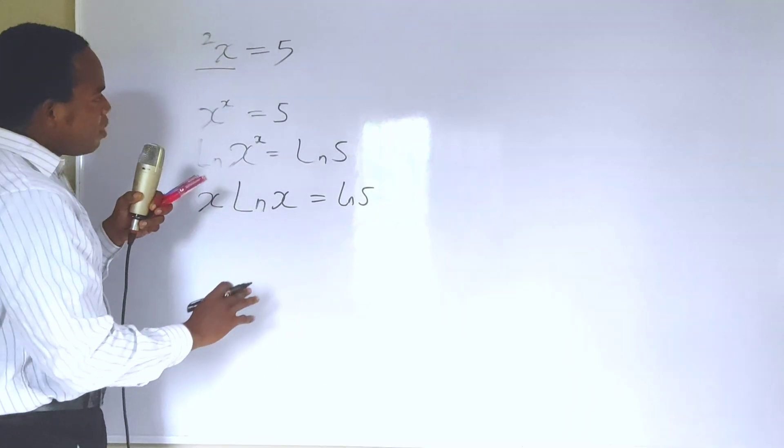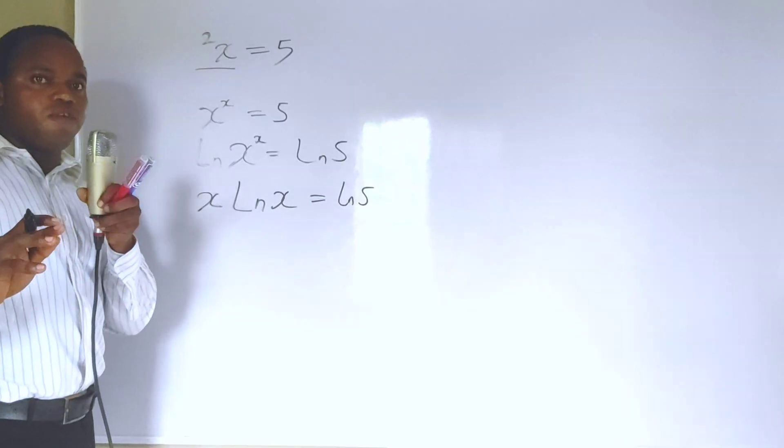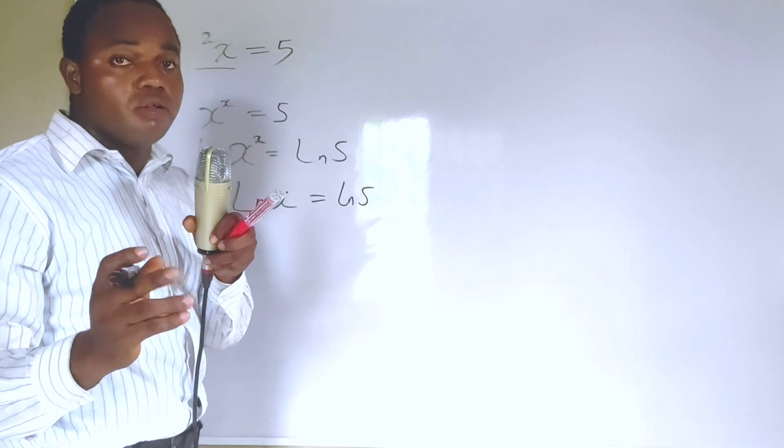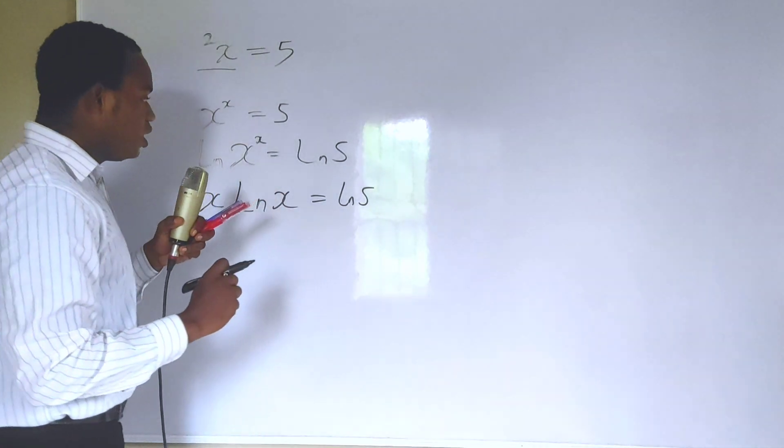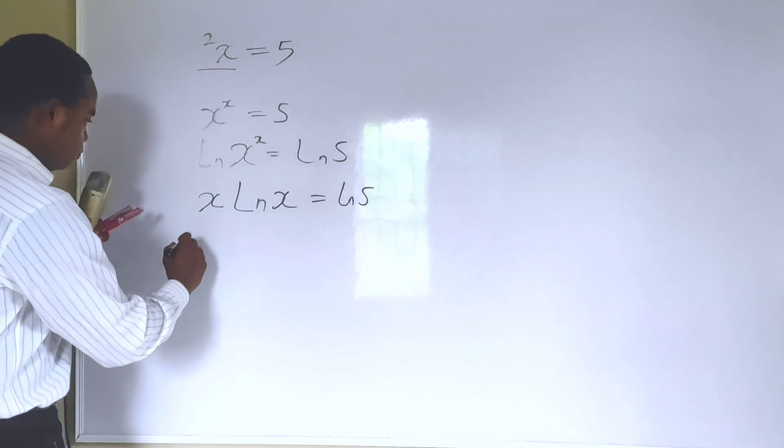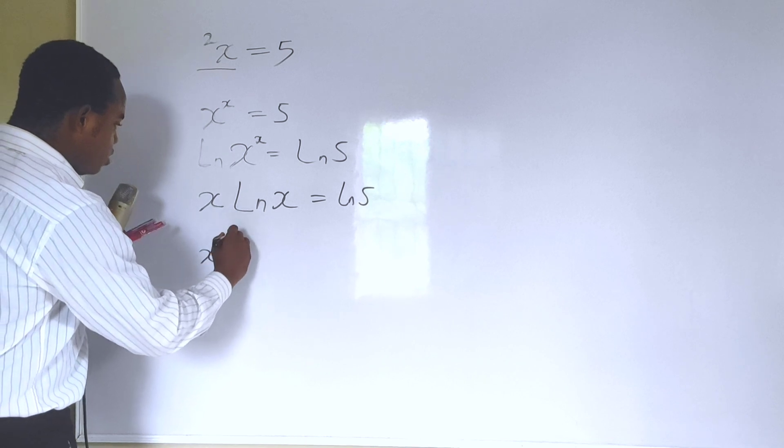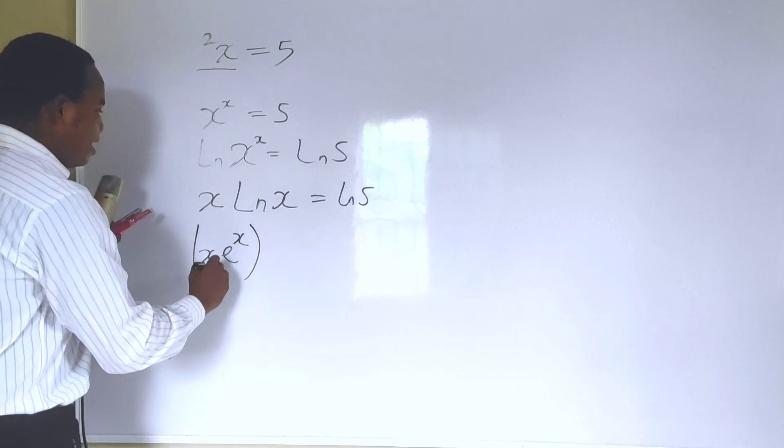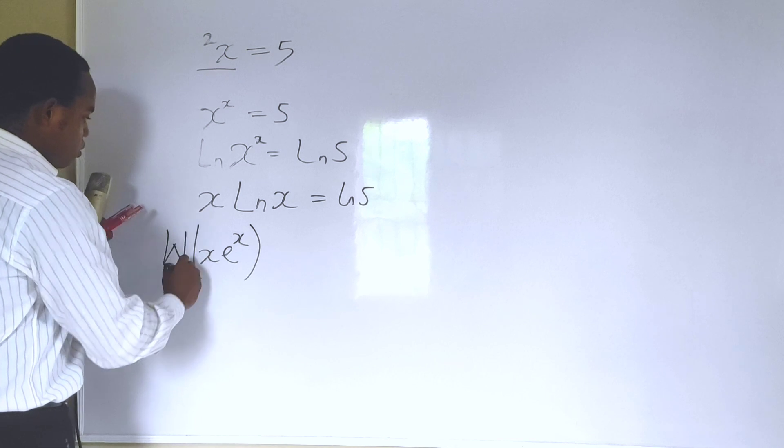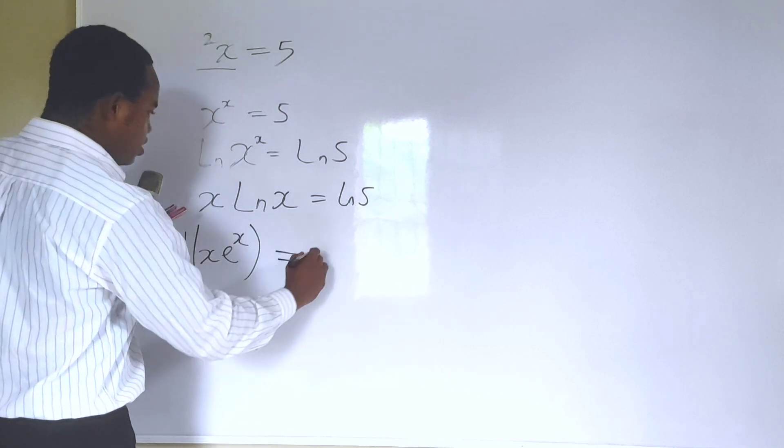The reason why I'm doing this in the first place is because I intend to solve this using the Lambert W function. This is also called product log. What does this imply? When you have an expression in the form x e to the x, if you take the Lambert W function of an expression in this form, the solution is x.